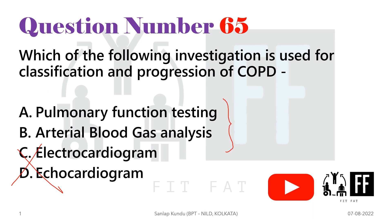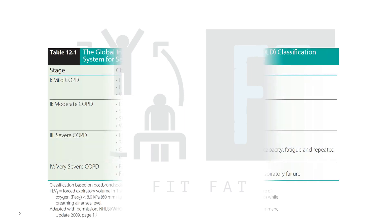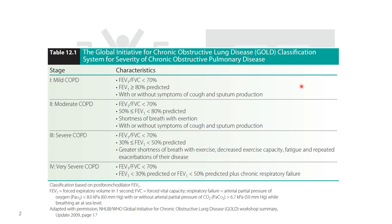To finally know the answer, let's see how we measure the progression of COPD. The progression can be measured by the GOLD classification, which has four stages of COPD: mild, moderate, severe, and very severe.